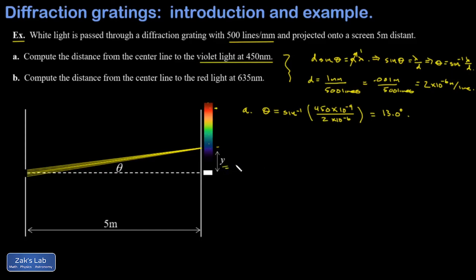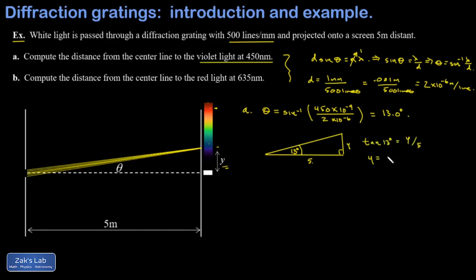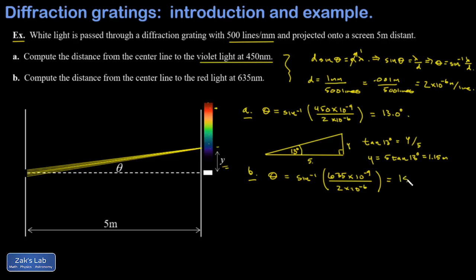We were asked for the actual distance y from the center line to the interference maximum. Unlike single- or double-slit patterns, 13 degrees is not small enough to use small-angle approximations, so we stay exact. With the screen at 5 meters and θ = 13°, tan(13°) = y/5, giving y = 5·tan(13°) = 1.15 meters. For part b, plugging in the red wavelength of 635 nm with the same slit spacing gives θ = 18.5°.